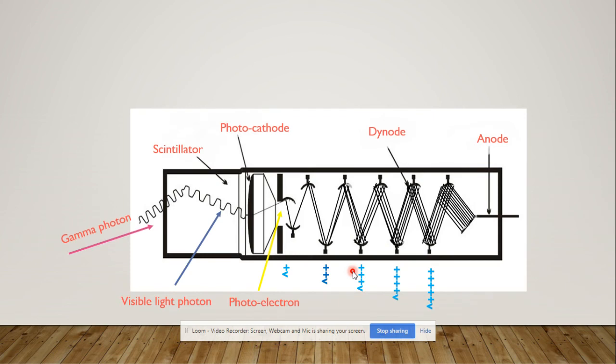The multiplied electrons reach the anode and are converted into an electronic signal. This signal goes to the ADC — the analog to digital converter — which converts it into digital data. The digital data then goes to the computer for further processing, and the computer presents all this information as a visible picture.